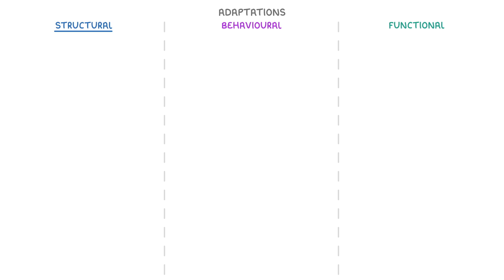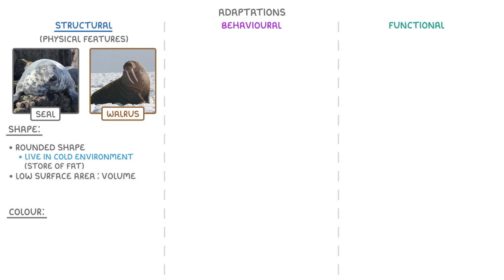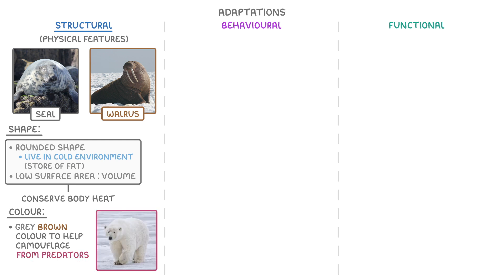Structural adaptations are the physical features we see, like the organism's shape or colour. So if you think of seals and walruses, the reason they're this rounded shape is because they live in cold environments, so they need a good store of fat and a low surface area to volume ratio, which both help them to conserve their body heat. And they have this grey-brown colour to help camouflage them from predators.